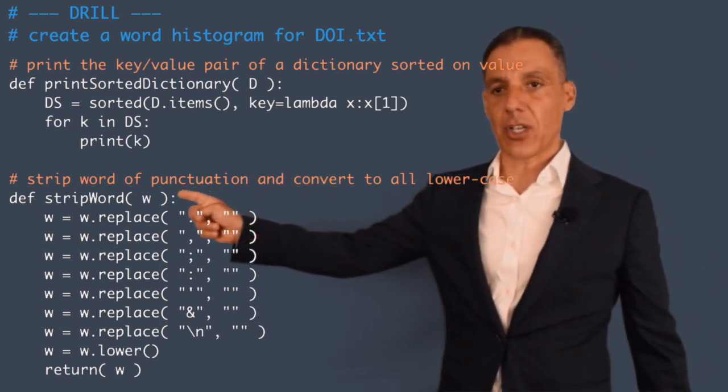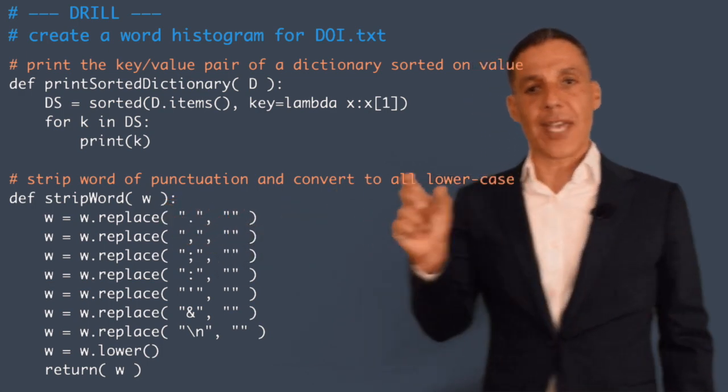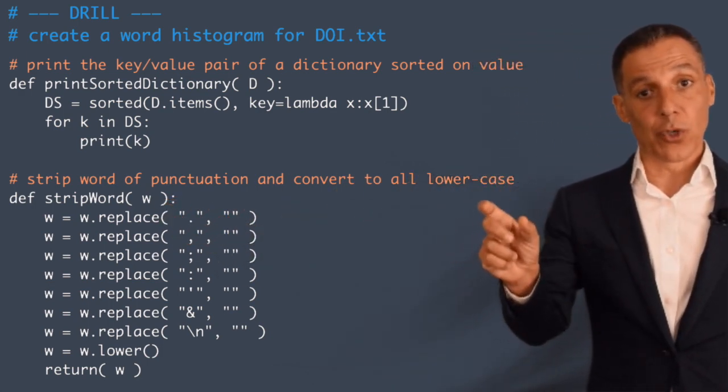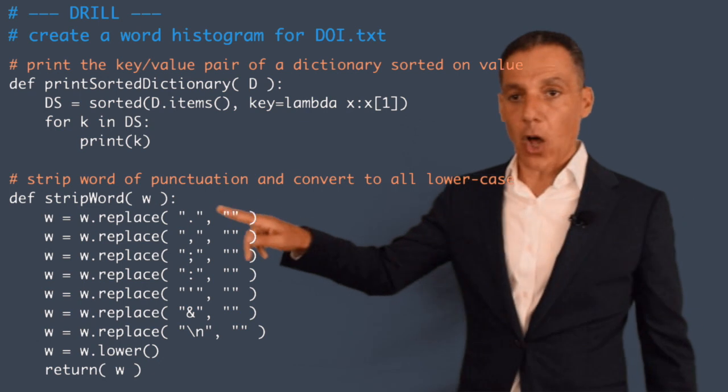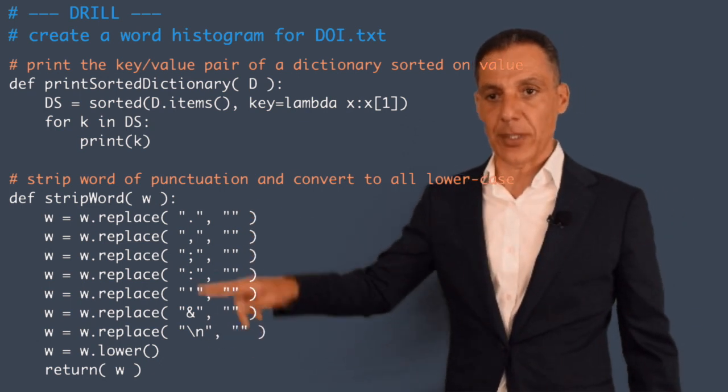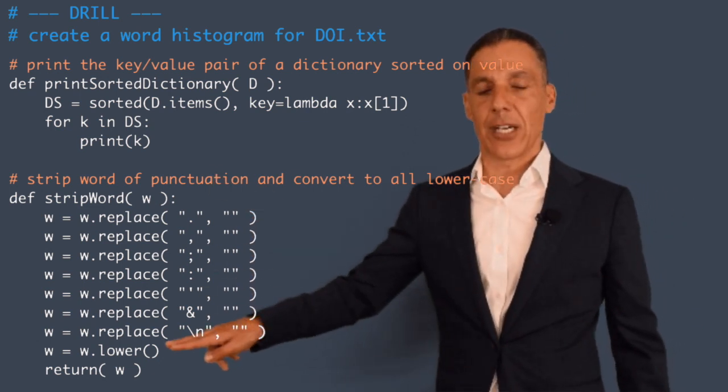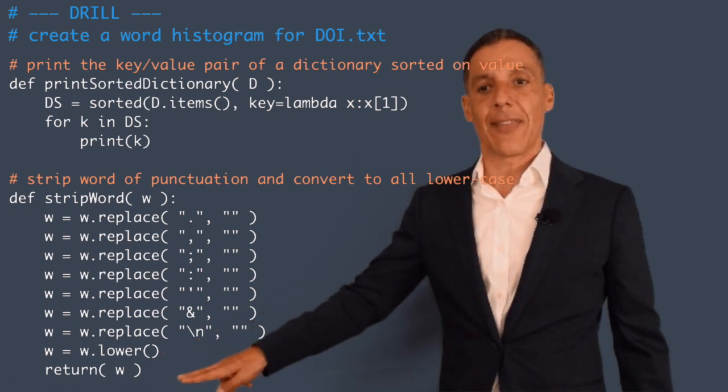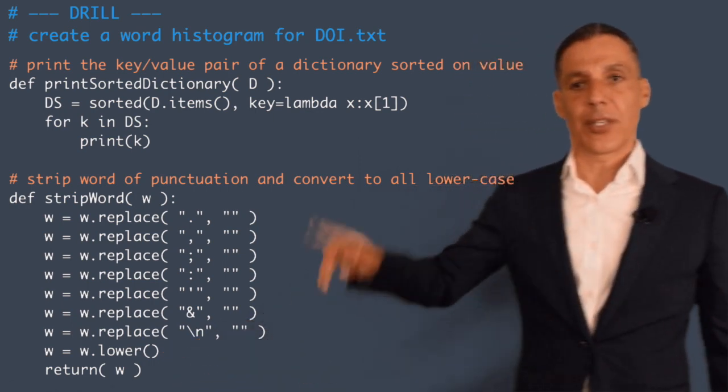So this function called stripWord will take as input a word. It will remove all punctuation, which is what these are doing here including carriage returns, and it will convert to lowercase, and then it will hand that back to you.